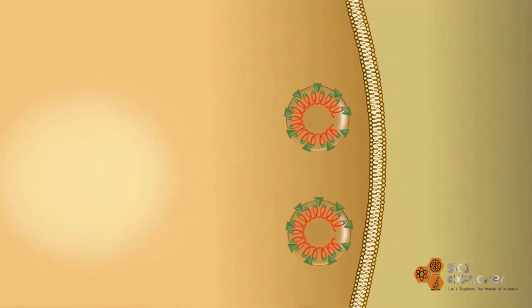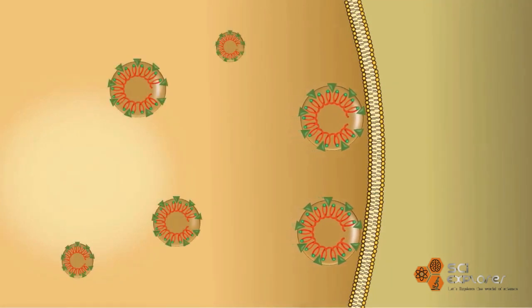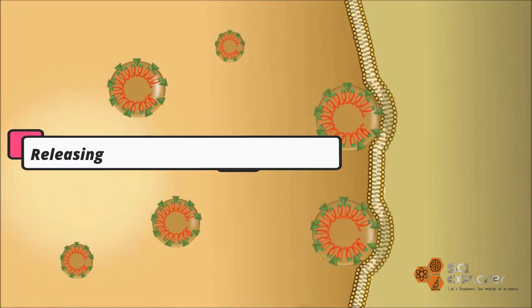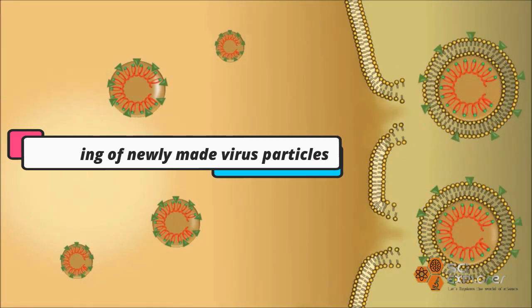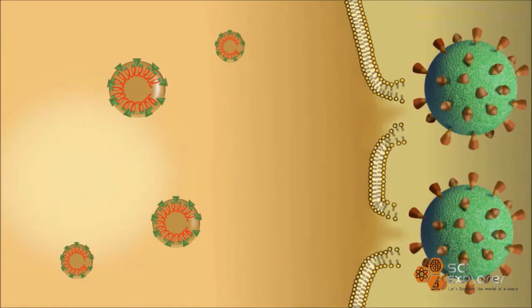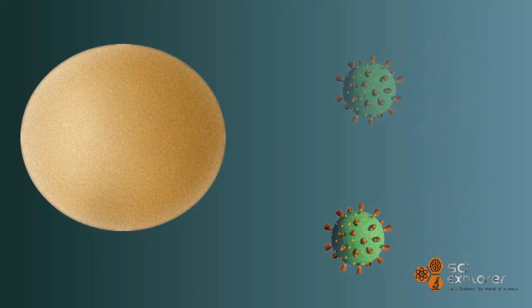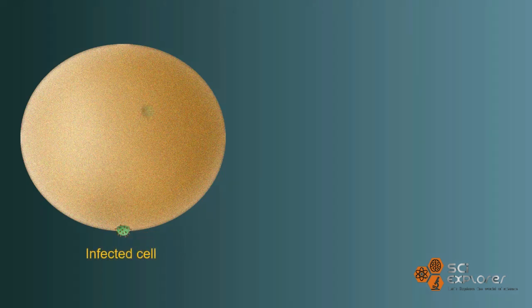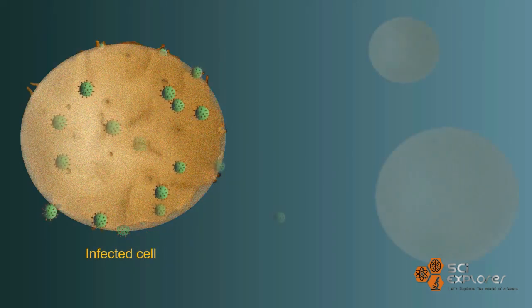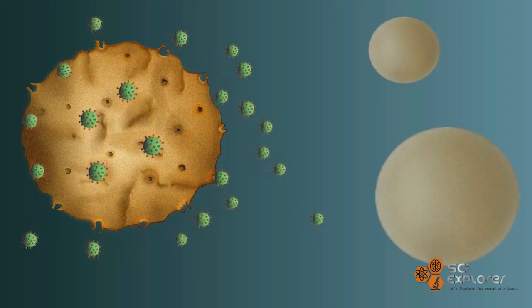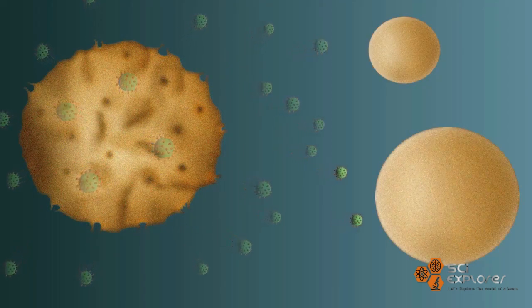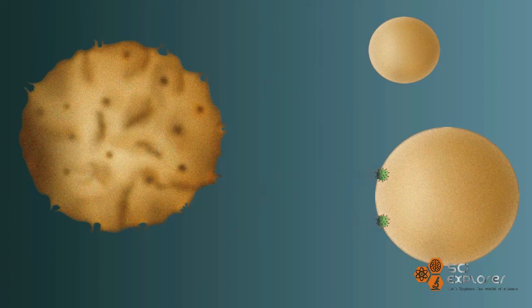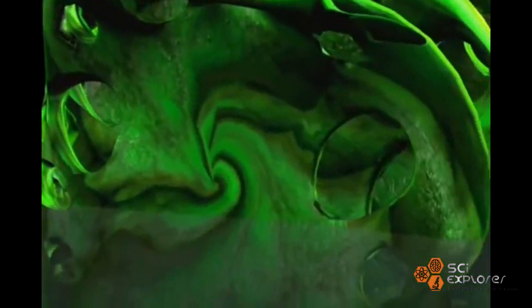The next step of the SARS-CoV-2 virus life cycle is the release of newly made virus particles out of the cell. This happens through the Golgi complex. The virus forms a lipid envelope from the Golgi complex membrane, and newly formed virus particles are then carried inside Golgi vesicles to the cell surface where they are expelled out of the cell.